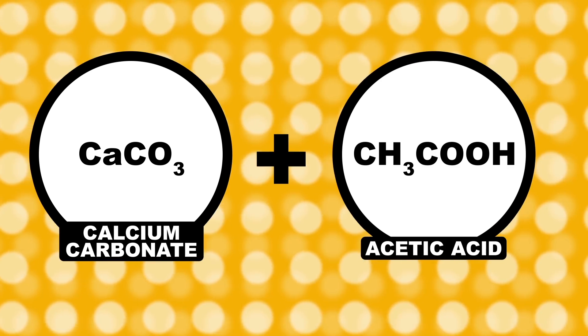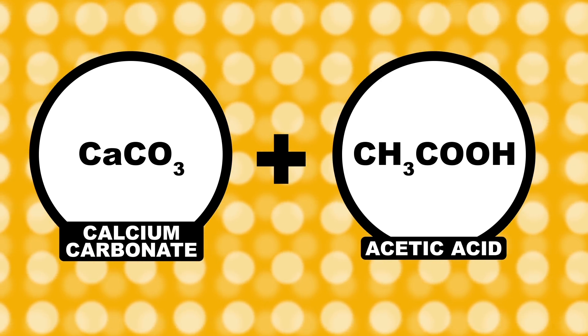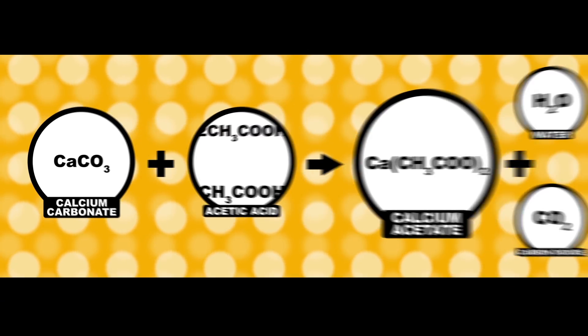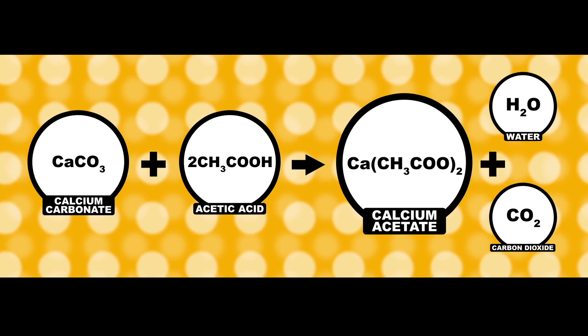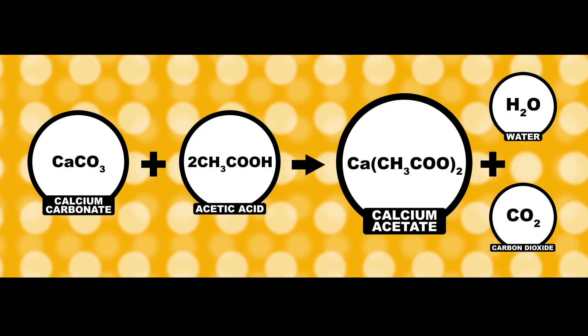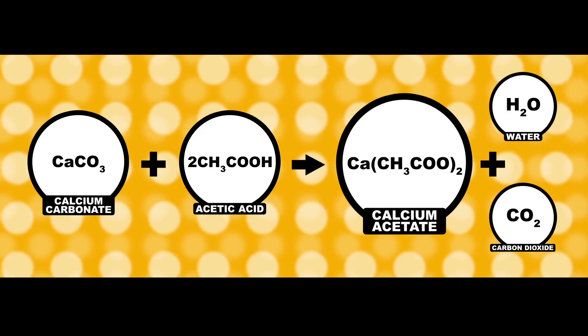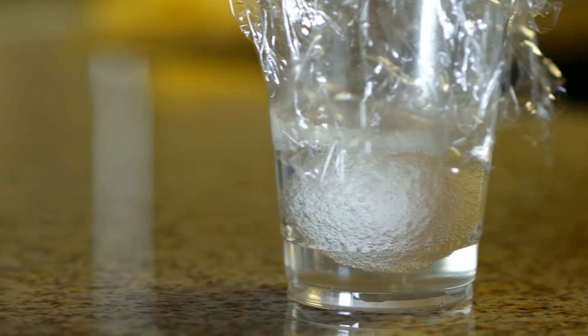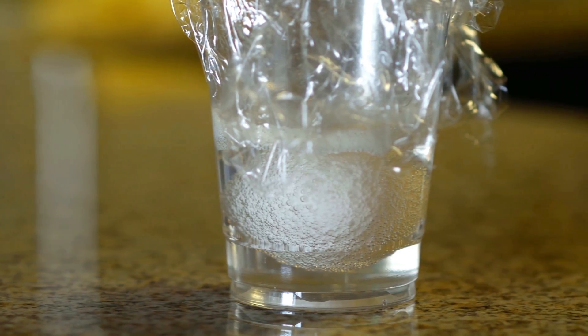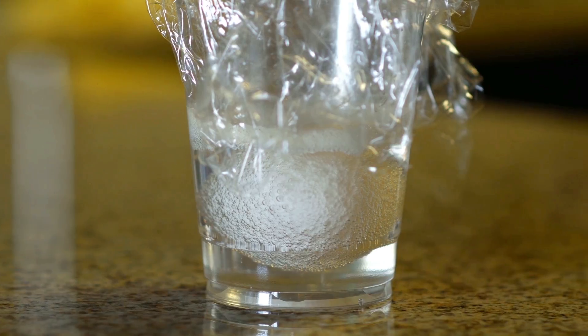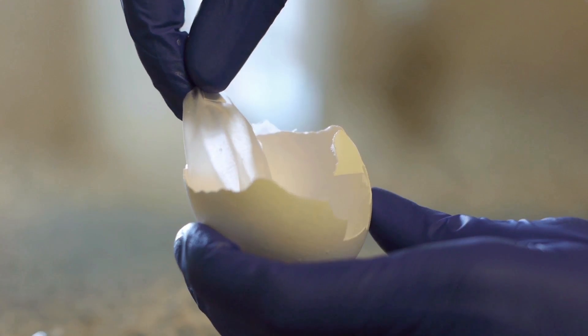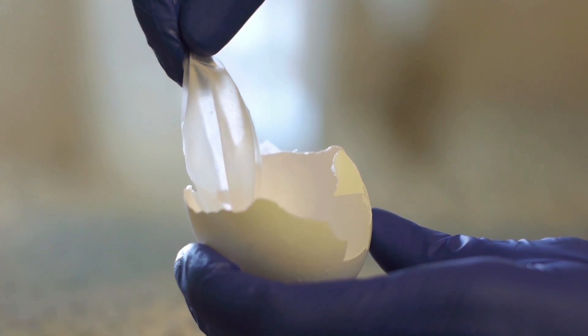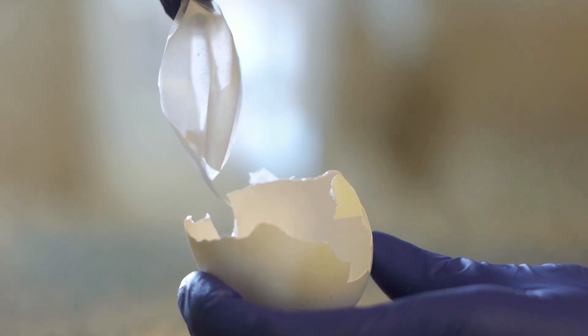The outside of a shell is made of calcium carbonate. The calcium carbonate reacts with vinegar, or acetic acid, to produce calcium acetate, which dissolves away along with water and carbon dioxide. The carbon dioxide is what's making those bubbles.